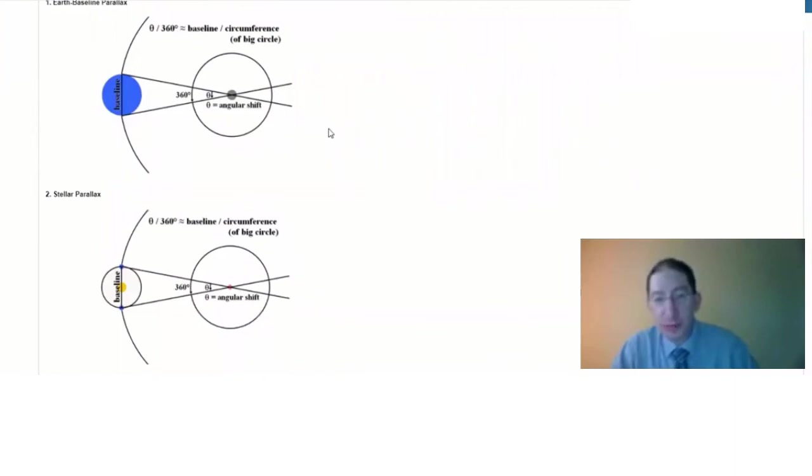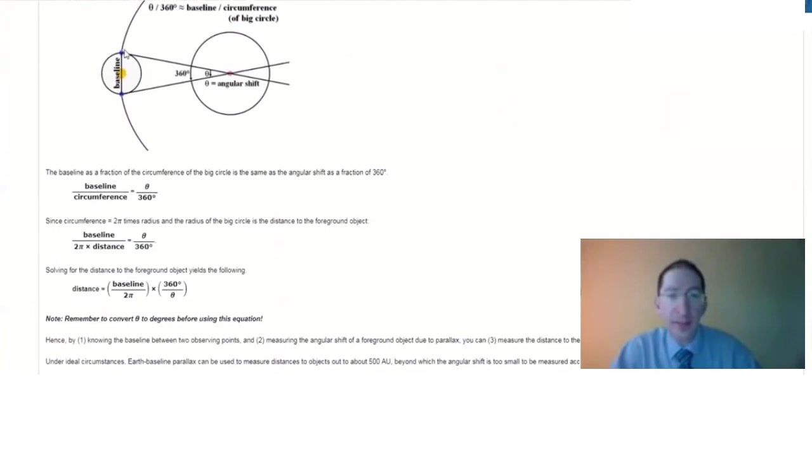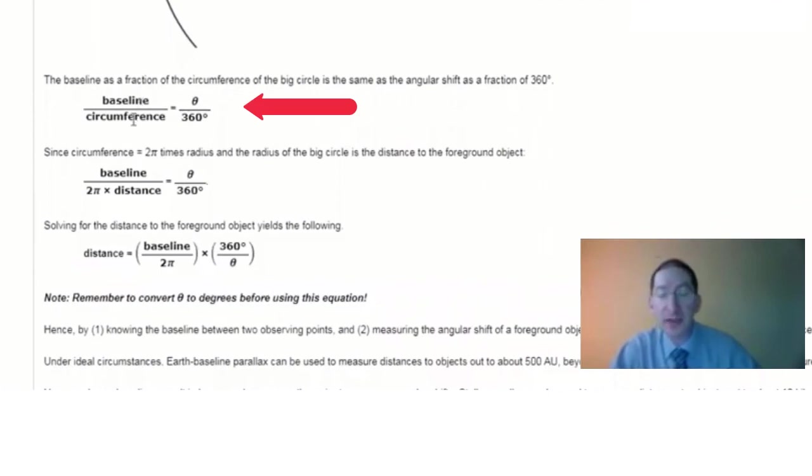Now, in both cases, Earth baseline parallax and stellar parallax, the geometry is the same, and it's the same geometry that we've used in the past two labs. The angular shift, as a fraction of 360 degrees, is equal to the baseline, the distance between the observing points, as a fraction of the circumference of this large circle. And that's the case whether the baseline is Earth's diameter, or the diameter of Earth's orbit. In both cases, the baseline divided by the circumference of the large circle is directly equal to the angular shift, divided by 360 degrees.